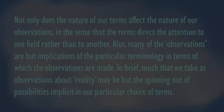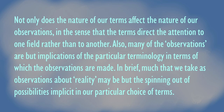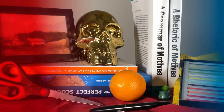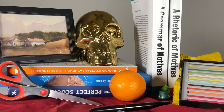Burke then expands on the screening effect of terms: 'Not only does the nature of our terms affect the nature of our observations — in the sense that the terms direct the attention to one field rather than another — but many of the observations are but implications of the particular terminology in terms of which the observations are made. Much that we take as observations about reality may be but the spinning out of possibilities implicit in our particular choice of terms.' A filtered photograph is still true, still objective in a sense, because it doesn't add anything to the image — but it does remove certain things, so the reality you see in a filtered photo isn't the same as in an unfiltered one.